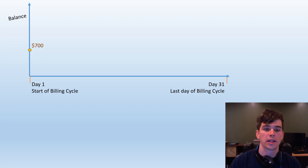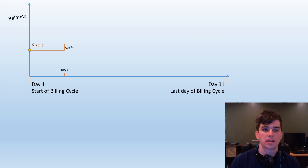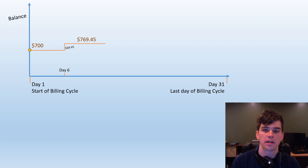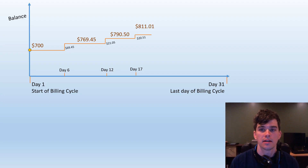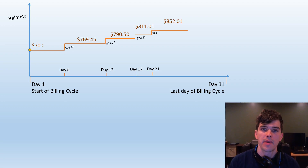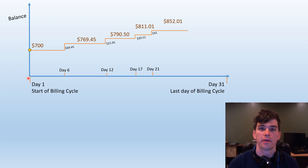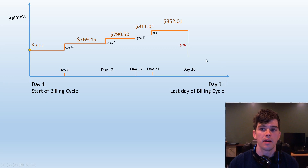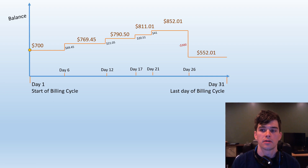Let's take a more realistic example. Suppose I start with a $700 balance, but then on day six I make a $69 charge at the grocery store, bringing my balance to $769.45. Then maybe I fill up with gas on day 12, go out to eat on day 17, and buy a gift on day 21 — now I'm up to a balance of $852. Around this point my payment from the previous month was due, so I make a payment of $300 on day 26, lowering my balance to $552.01. This is a much more realistic example of typical credit card usage.